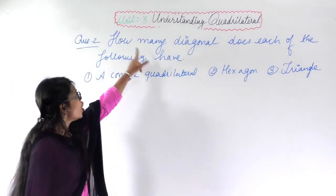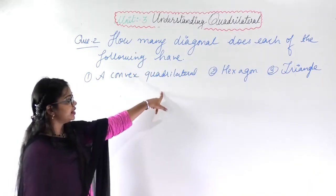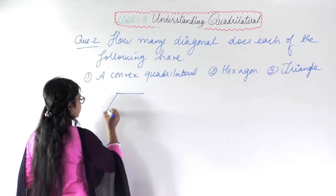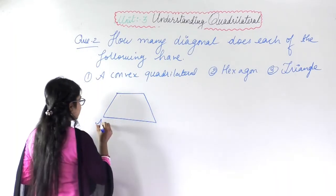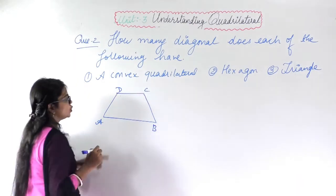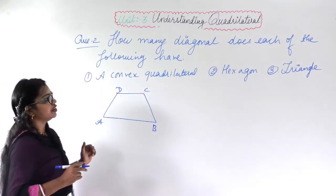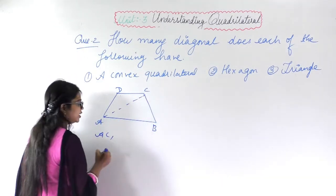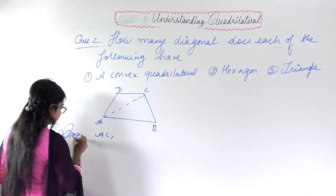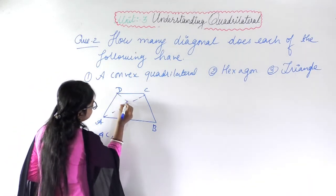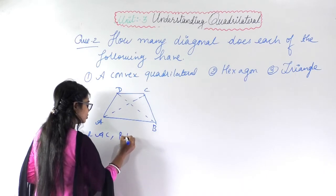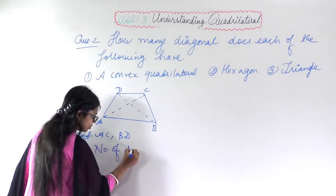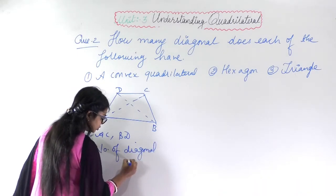Question number 2: how many diagonals does each of the following have? A convex quadrilateral, a hexagon, and a triangle. For a convex quadrilateral ABCD, I join AC and BD — that gives 2 diagonals. Number of diagonals is 2.